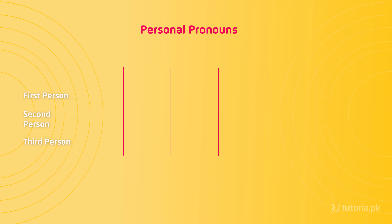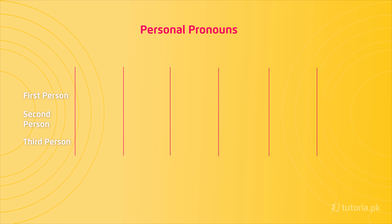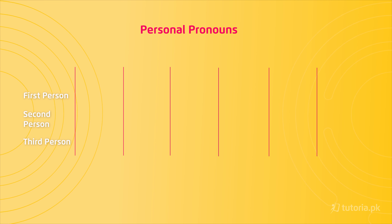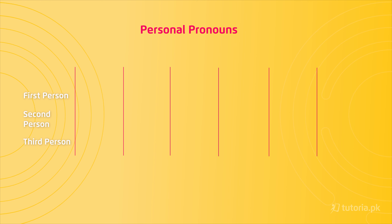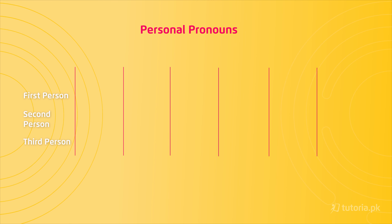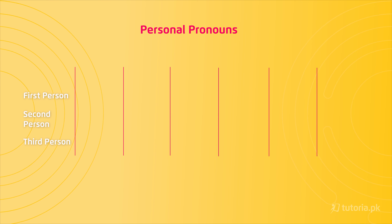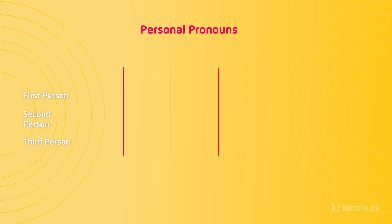First person is the person who is talking — like I am first person. Second person is the person who you are talking to — like you are second person. Third person is the person who is being talked about and is present in this scenario — so they are the third person.